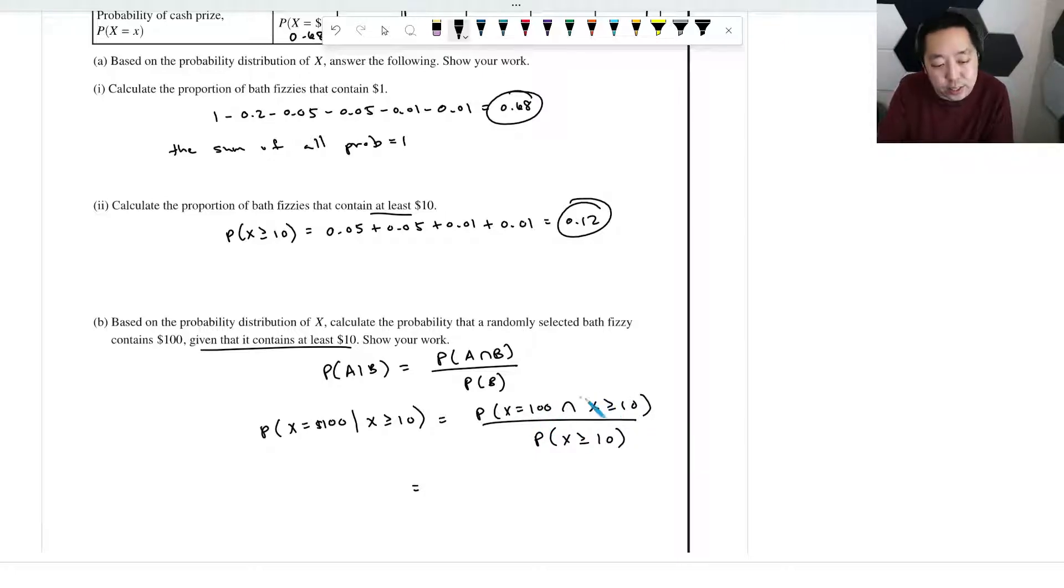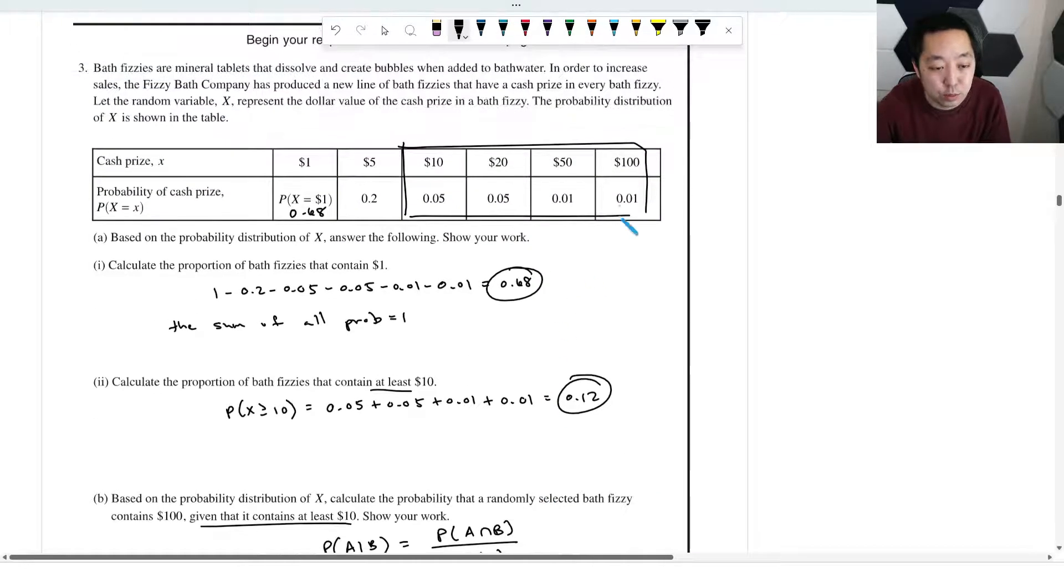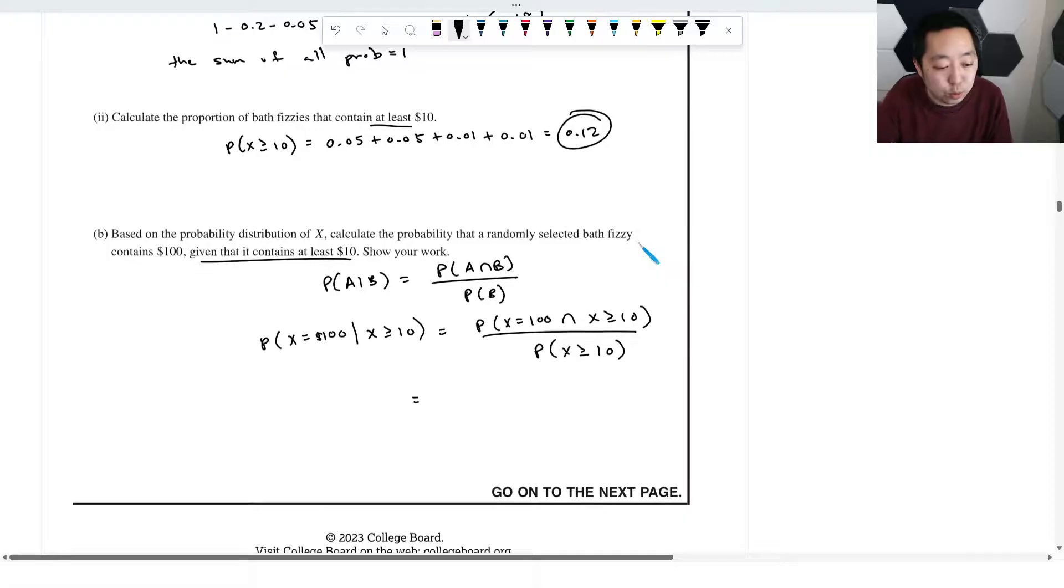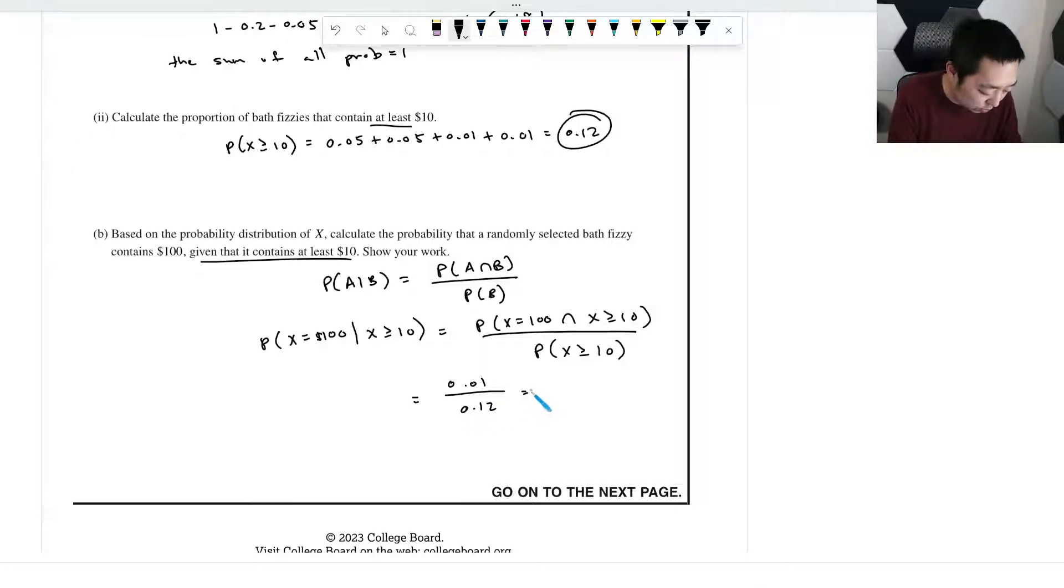So what is this event that it's 100 and it's greater than or equal to 10? Well, it's only 100 then at that point, right? Because this event just means that it's 100, because 100 would be greater than or equal to 10. So that's 0.01 is that probability. And what's the probability that x is greater than or equal to 10? We just calculated that, 0.12. So then that's going to be 0.0833.